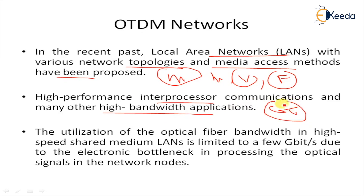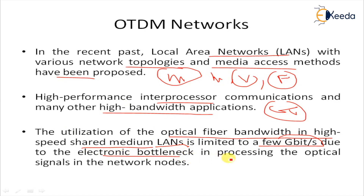For this reason, future networks have to provide data rates in terms of gbps — higher data rates in the gbps range, on demand, with high overall channel efficiency and minimum latency. This can only be realized by a photonic network or PON network. Currently, the utilization of optical fiber bandwidth in high-speed shared medium LANs is limited to a few gigabits.